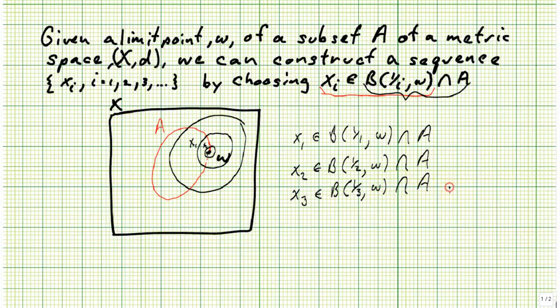And I can continue this process, obviously, until I get to my arbitrary xi, which is in the ball of radius one over i, w, intersected with a.